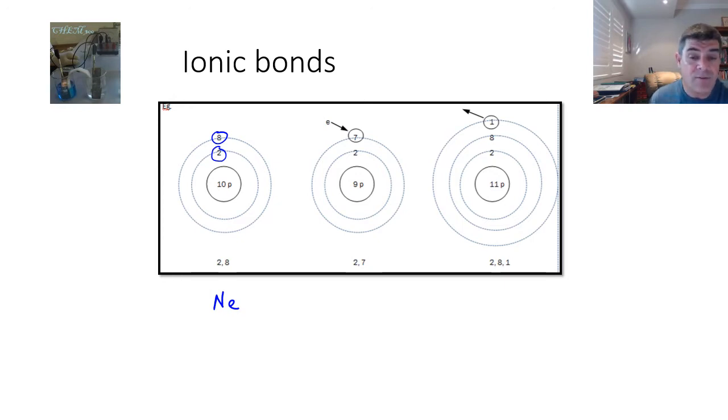The element before neon is fluorine in the periodic table. It's element number 9, and it has 2 and 7 in its electron shells. The element after neon is sodium, which has 11 protons and an electron configuration of 2, 8, and 1.